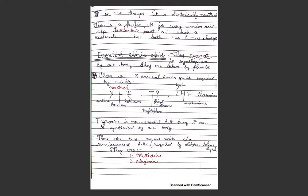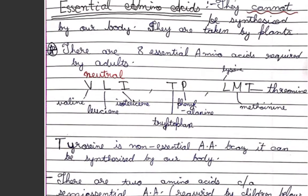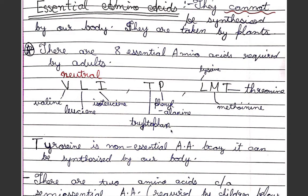Essential amino acids are those that are not synthesized by our body, however we need them, so they are taken into our body through diet. There are eight essential amino acids required by adults: VLITPFLMT - valine, leucine, isoleucine, tryptophan, phenylalanine, lysine, methionine, and threonine. Valine, leucine, and isoleucine are neutral. Tyrosine is not an essential amino acid because it can be synthesized by our body.